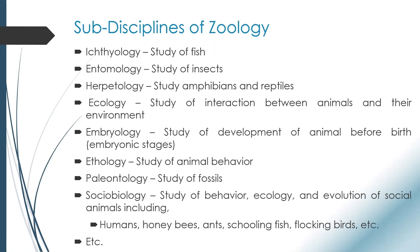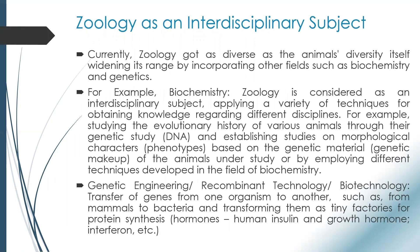For example, medical entomology is a sub-discipline of entomology. These subjects cover different aspects of zoology — for example, if we study fish it's ichthyology, if we study insects it's entomology, if we study the behavior, ecology, and evolution of social animals it's sociobiology. Zoology is an interdisciplinary subject.